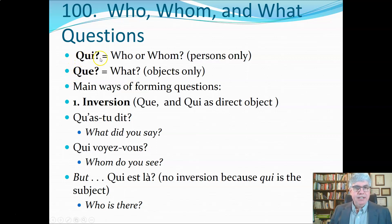Qui when used as a question word means who or whom and refers to persons only. Que is used to refer to what when we're talking about objects, not persons. There are four main ways of forming questions. The first is with inversion, which means you've got the subject and you're going to stick it at the end of the verb.